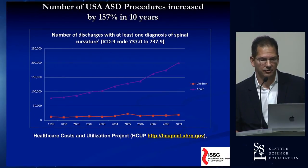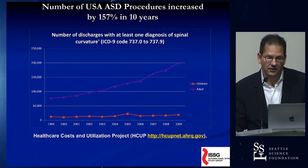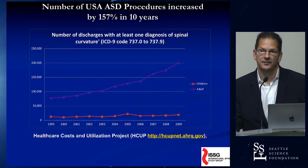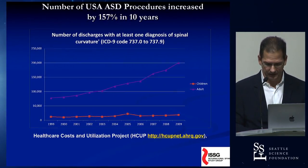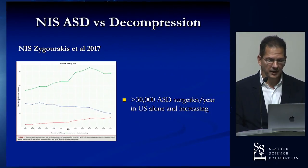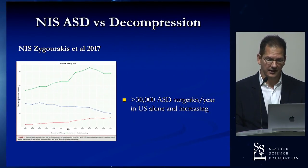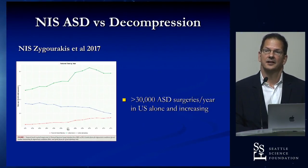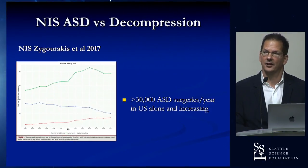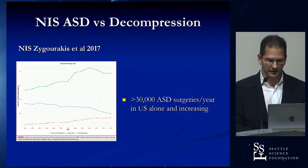If we look at utilization in terms of procedures, the number of admissions for ASD has gone up 157%. There are more than 30,000 ASD surgeries performed every year in the United States, and somewhere between $75,000 to $125,000 per index procedure — it's a lot of money being spent.